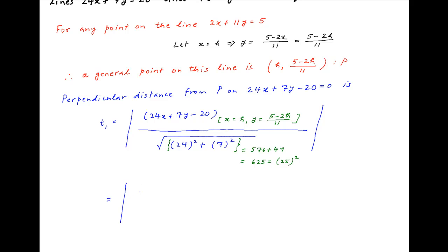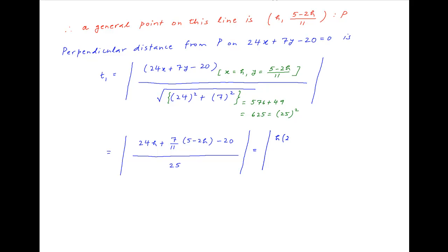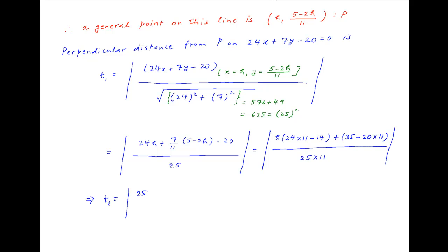Therefore, t1 is equal to the absolute value of 24h plus 7 times (5 minus 2h upon 11) minus 20, divided by 25. This simplifies to the absolute value of h times (24 times 11 minus 14) plus 35 minus 20 times 11, divided by 25 times 11. This further simplifies to the absolute value of 250h minus 185 divided by 25 times 11, which is equal to the absolute value of 50h minus 37 divided by 55.